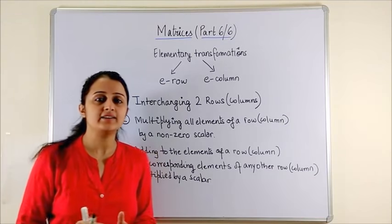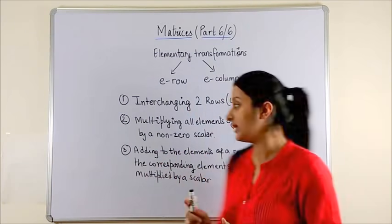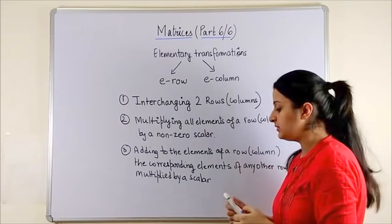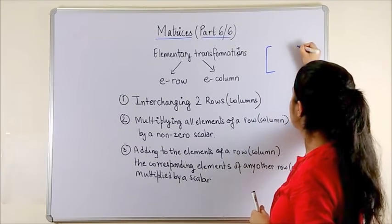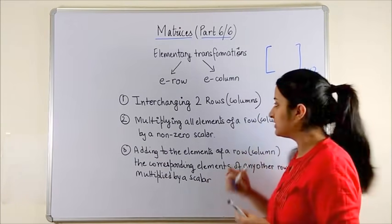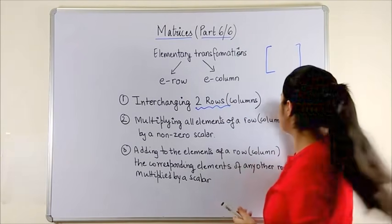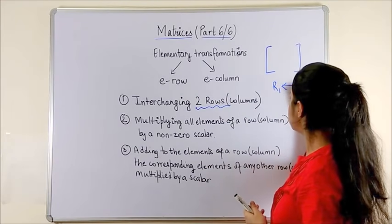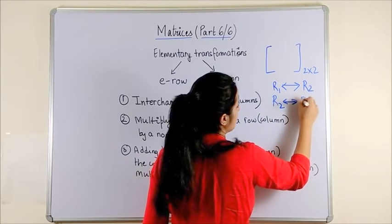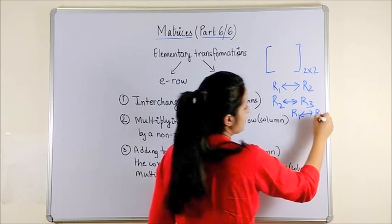Let's understand the three valid row or column transformations we would apply. The first one is interchanging two rows or columns. For instance, in a 2x2 or 3x3 matrix, we can interchange row 1 with row 2, row 2 with row 3, or row 1 with row 3. Any of them is possible.